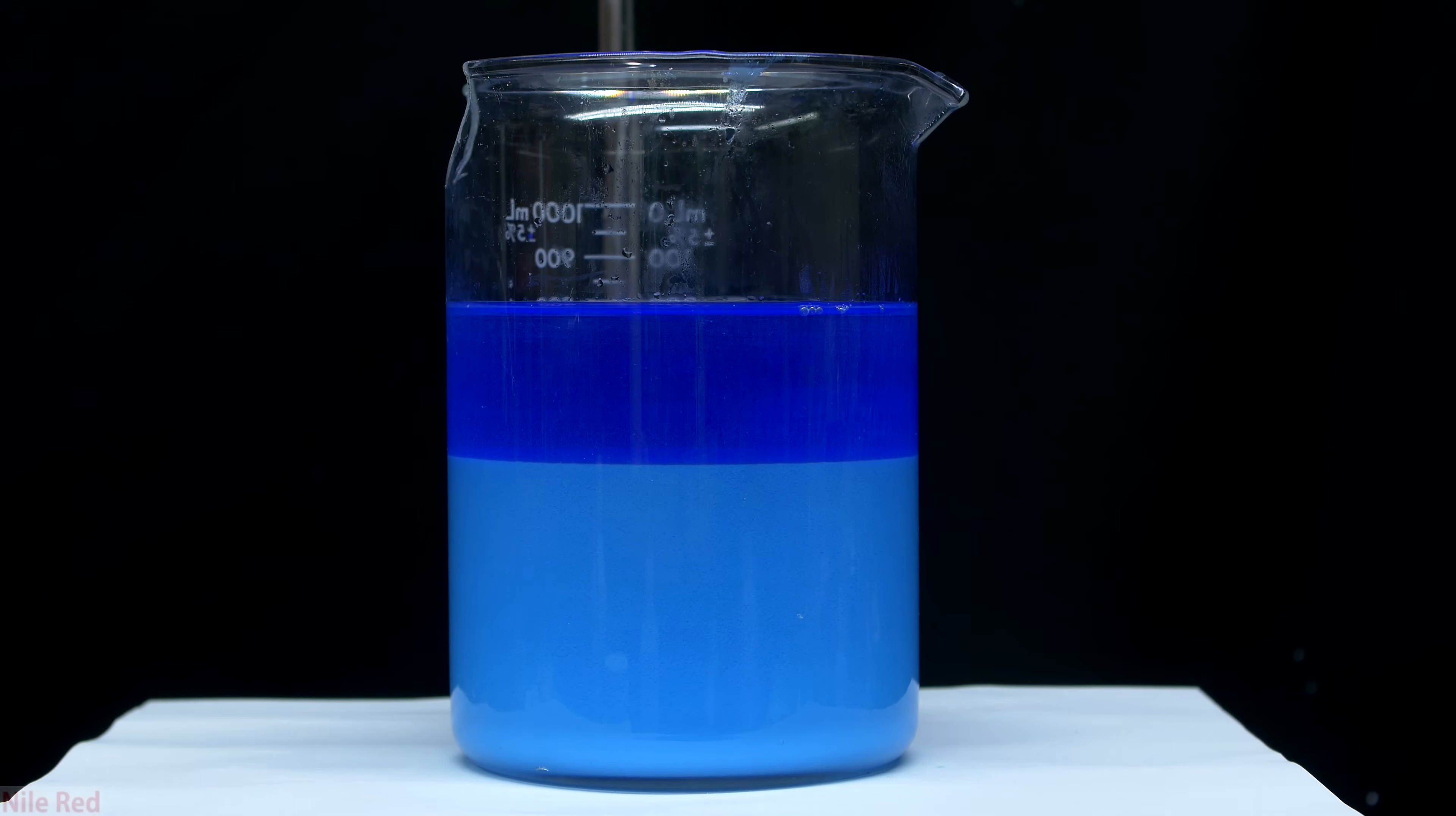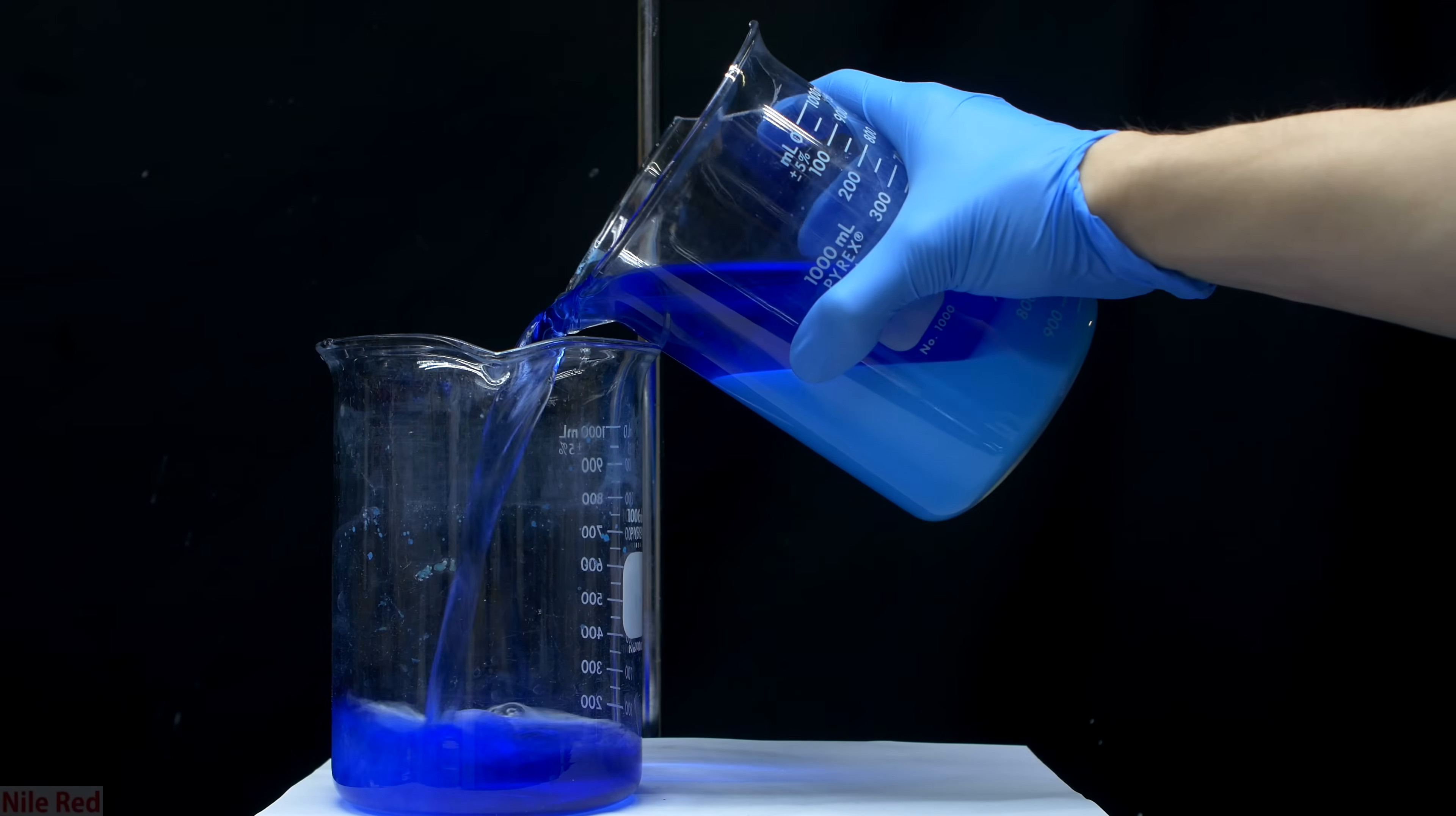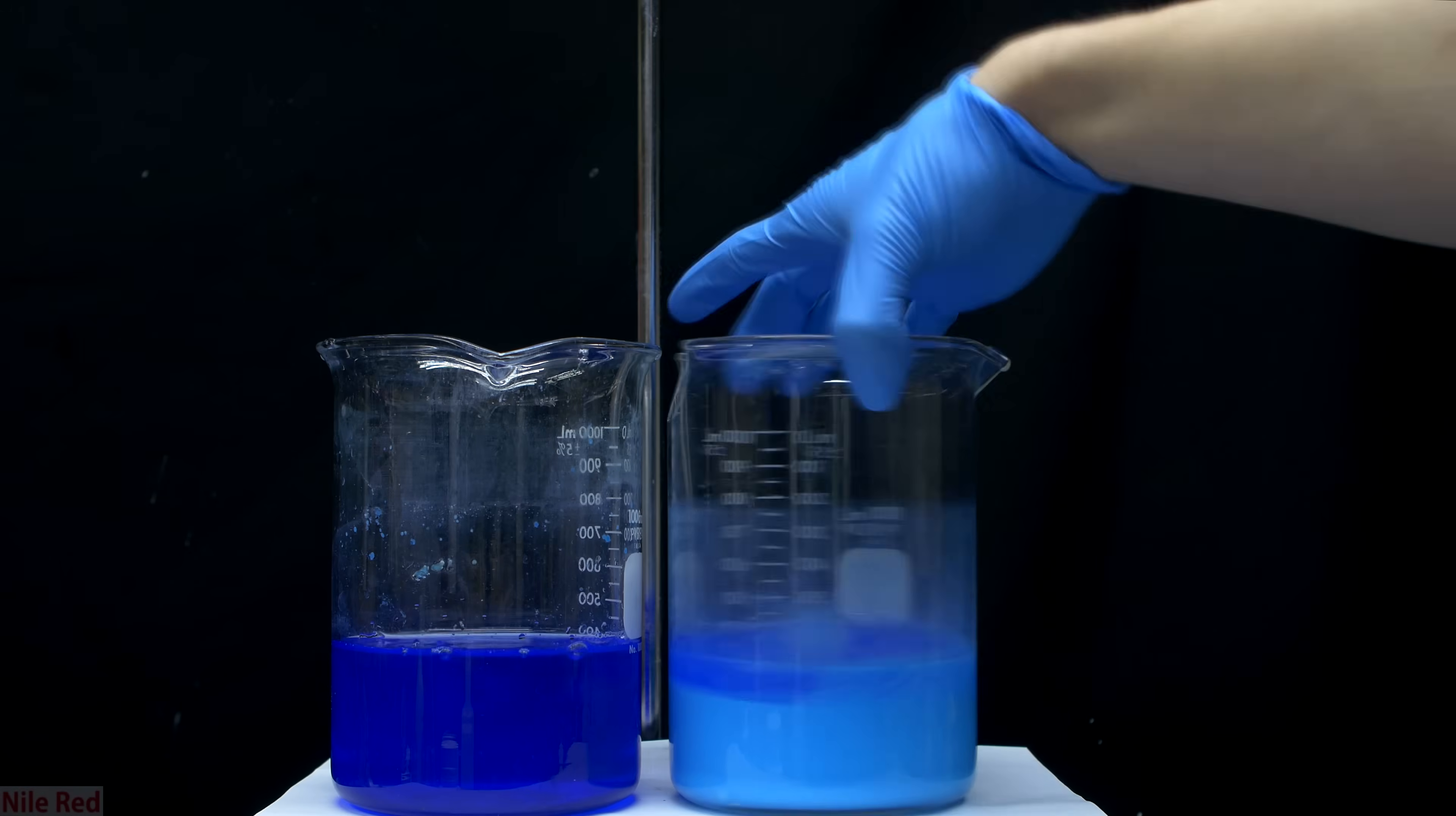I let it stir for several minutes, and then I allowed it to stand for all of the copper hydroxide to sink to the bottom. Eventually, most of the copper hydroxide had sank to the bottom, and I decanted off the upper water layer. After we've poured off most of the water, we can move on to our filtration step.